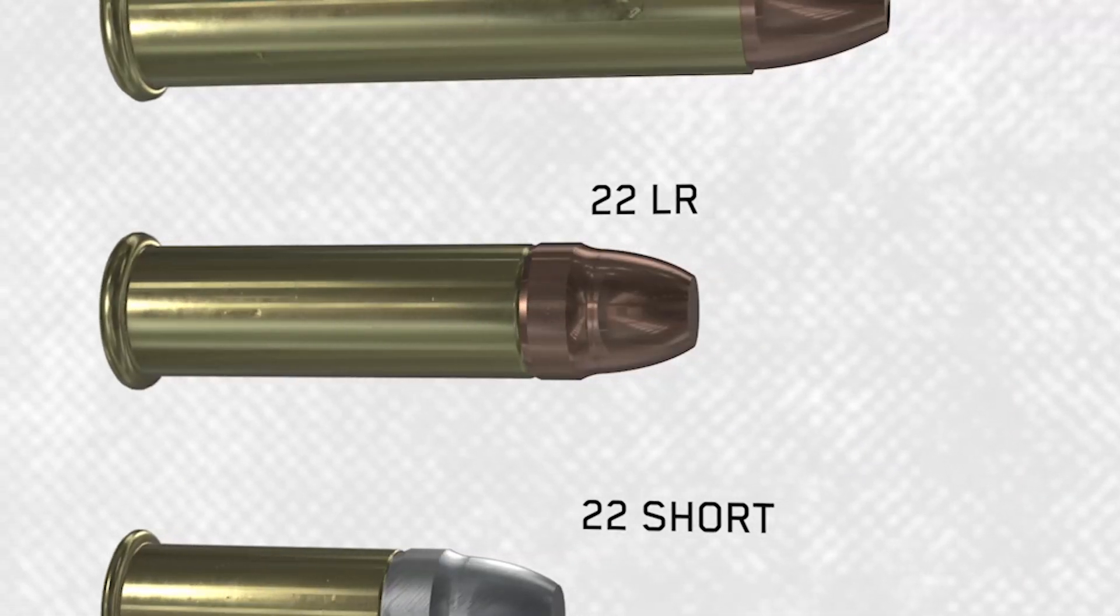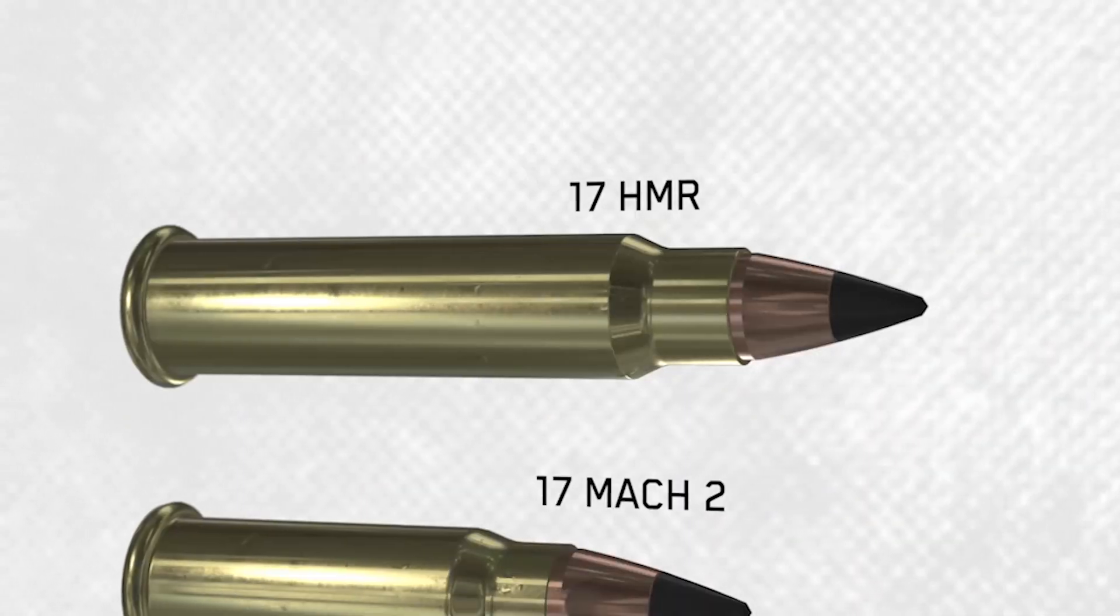The most common rimfire cartridges are 22 long rifle and 17 HMR.